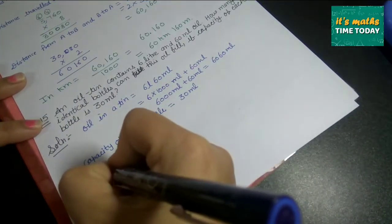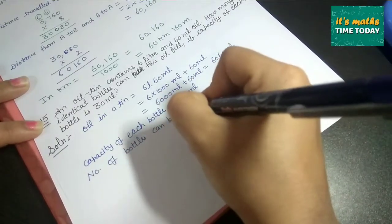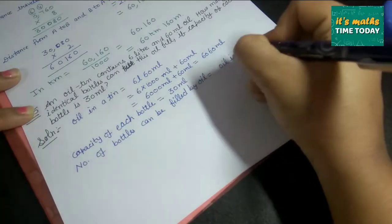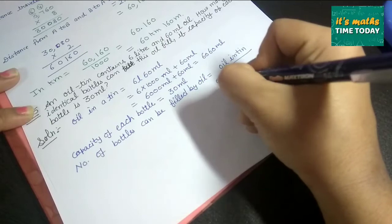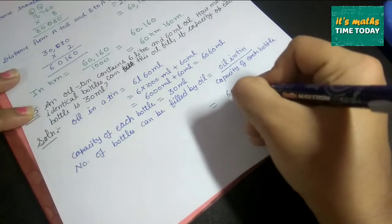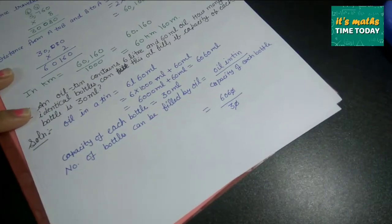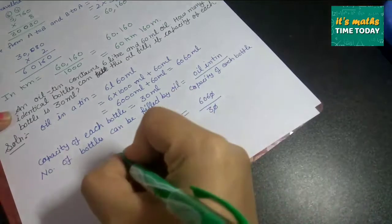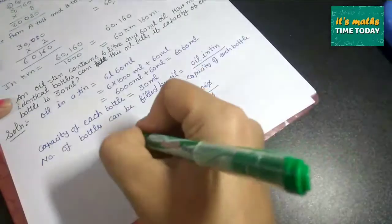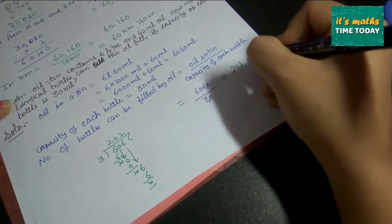Now we need to find the number of bottles that can be filled by the oil. Number of bottles = oil in tin ÷ capacity of each bottle. So 6060 ÷ 30. We can cancel zeros: 606 ÷ 3. Calculating: 3 goes into 6 twice, 3 into 0 is 0, 3 into 6 is 2 — giving 202. So 202 bottles can be filled.